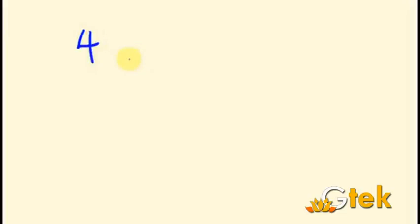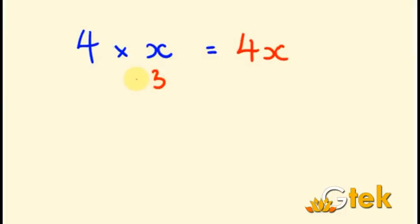We will see some other examples. I am going to give the expression 4 into X — that is 4 times X, which we represent as 4X. We can assign some value to X so that the answer will vary. If X equals 3, then 4 into 3 is 12. Similarly, if X is 7, it is 28.